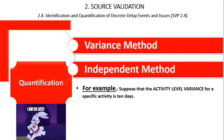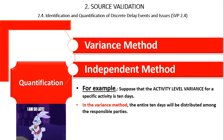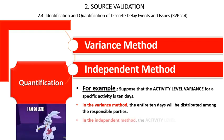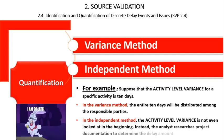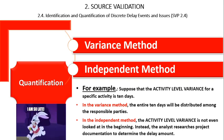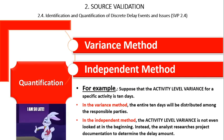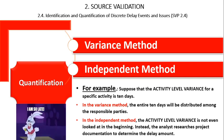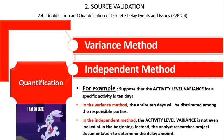In the variance method, the entire 10 days will be distributed among the responsible parties. However, in the independent method, the activity-level variance is not even looked at in the beginning. Instead, the analyst researches project documentation to determine the delay amount. If the project document states that the activity was delayed three days by an event, the remaining seven days of the activity-level variance will not be assigned to this delay. If the documentation states the delay event was 12 days, the analyst will consider the delay to be 12 days, but since the activity-level variance is 10, the other two days may have been made up via acceleration.